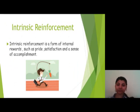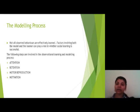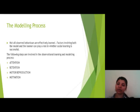Intrinsic reinforcement is a form of internal reward such as pride, satisfaction, and sense of accomplishment. Next is the modeling process. Not all observed behaviors are effectively learned. Factors involving both the model and the learner can play a role in whether social learning is successful. The steps involved in the observational learning and modeling process are: attention, retention, motor reproduction, and motivation.